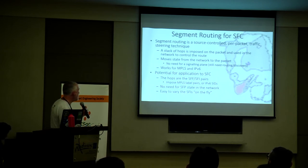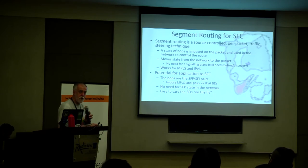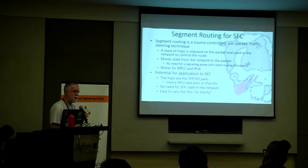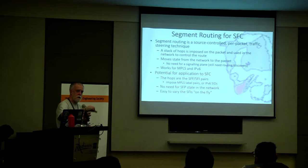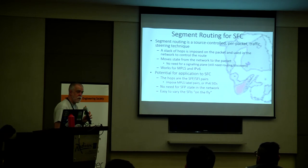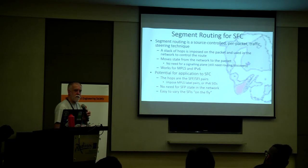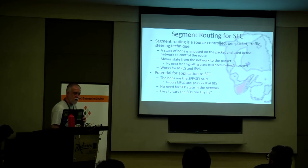Segment routing is a source-controlled approach to packet routing where you impose a stack of hops. It works for MPLS and IPv6 and could potentially be used for SFC — you specify a sequence of service functions as a source route in a packet, meaning you don't have to put state in the network and can vary packet-by-packet which functions you go through. However, a long service function chain means a long list to push. As noted earlier, most examples don't suggest there are many service functions.